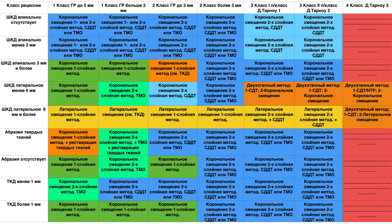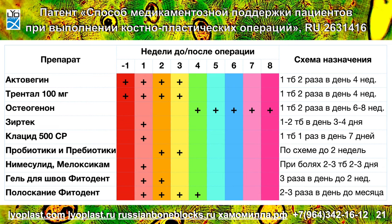Методики могут быть одноэтапные, двухэтапные, однослойные, двуслойные, комбинированные. Одни с трансплантатом, другие с твердой мозговой оболочкой или с отечной. Именно эта таблица и комбинирование признаков фенотипического планирования дает понять, какую методику применять.